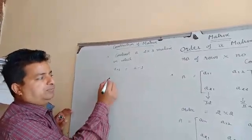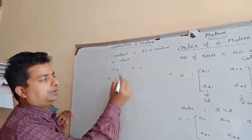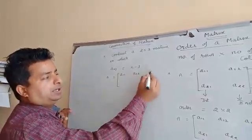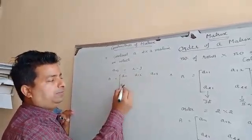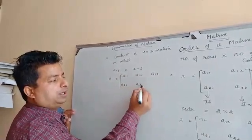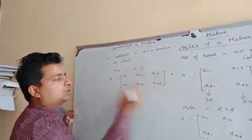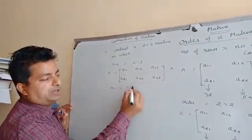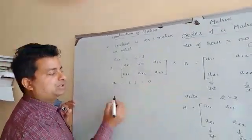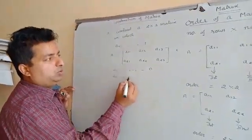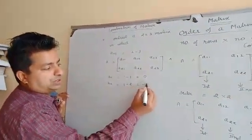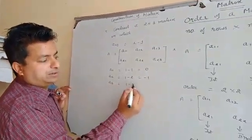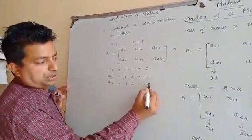First, we take a matrix of order 2 by 3 with elements A11, A12, A13, A21, A22, A23. We find each element using Aij = i − j. A11: i is 1, j is 1, which gives 0. A12: i is 1, j is 2, which gives minus 1. A13: i is 1, j is 3, which gives minus 2.